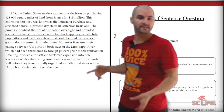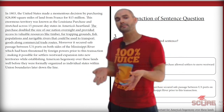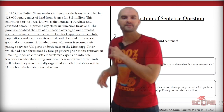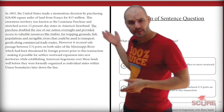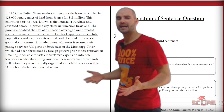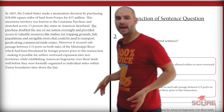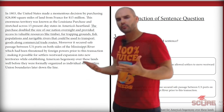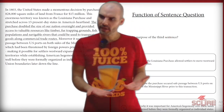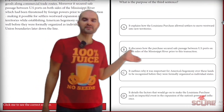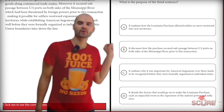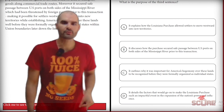Question three. The first sentence says: 'In 1803, the United States made a momentous decision by purchasing 828,000 square miles of land from France for $15 million.' So we're talking about the Louisiana Purchase. The underlined third sentence says: 'The purchase doubled the size of our nation overnight and prevented access to valuable resources,' and it mentions what those resources are. So it's explaining more or less the impact or significance of this purchase. Looking at answer A — it explains how the Louisiana Purchase allowed settlers to move westward — no, it does not. Answer B discusses how the passage secured safe passage between U.S. ports — it also does not do that.